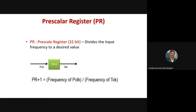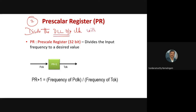The second important register is the pre-scalar register, which is used to divide the PLL output clock by a suitable value. This gives direct control over the clock frequency going to your timer counter.